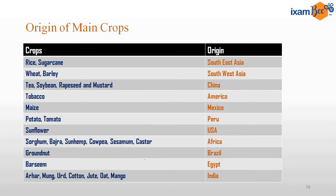World Soil Day is celebrated on 5th December. Regarding the origin of some main crops: rice and sugarcane originated from Southeast Asia, and wheat and barley originated from Southwest Asia. Tobacco and maize are also important, and sunflower originated from the USA.